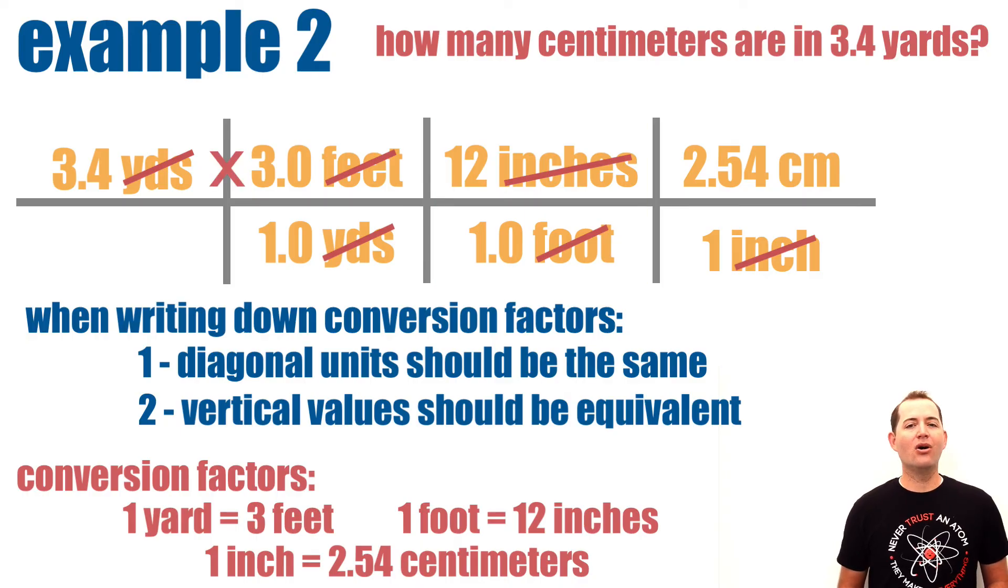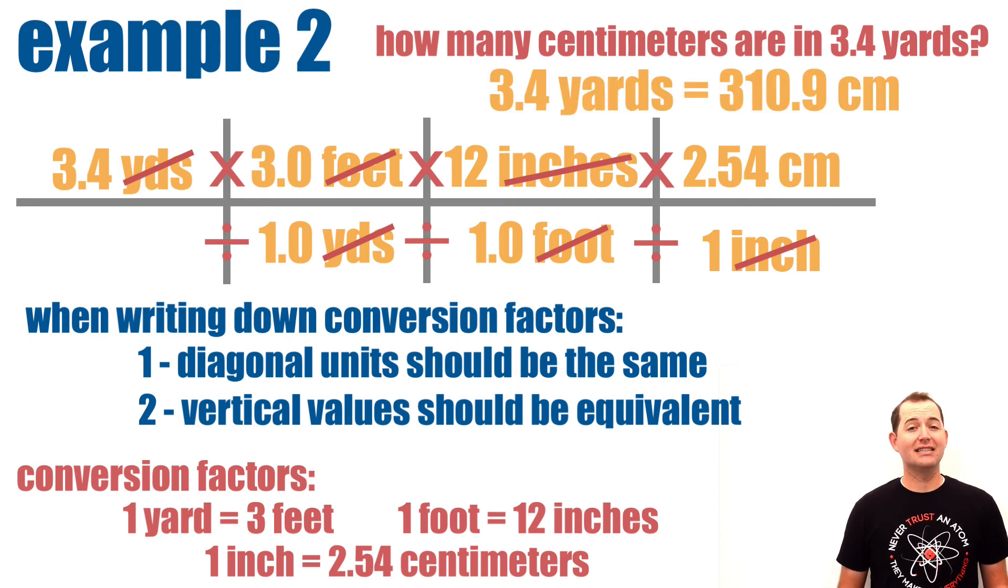Finally, we will multiply by each of the values across the top and then divide by each of the values in the bottom. Again, when we multiply or divide by 1, it doesn't change our value. And so we can skip these processes without it changing our answer.